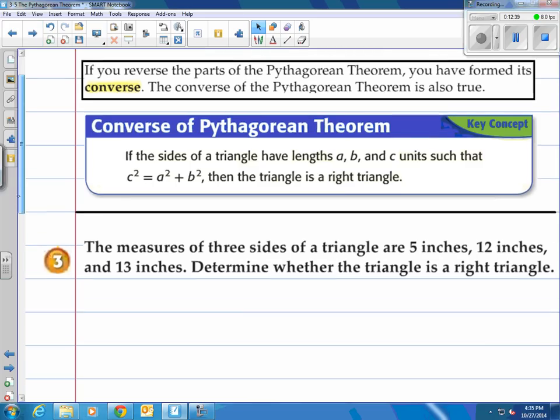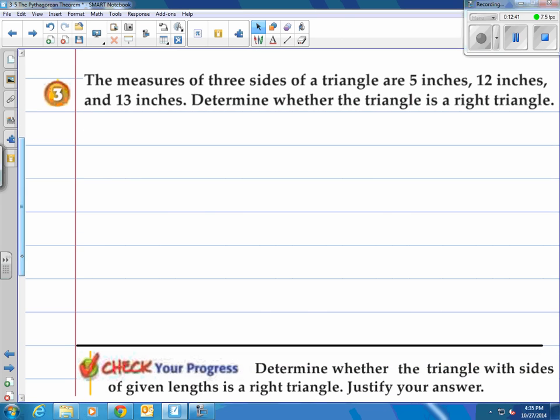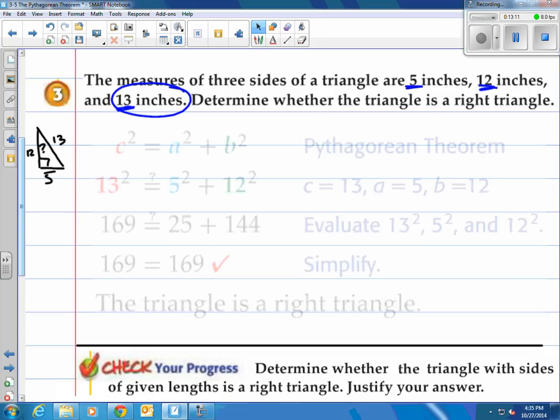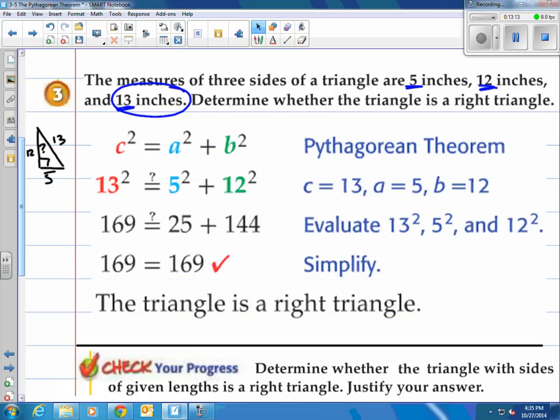So take a look at number three here. It says the measures of three sides of a triangle are 5 inches, 5 inches, 12 inches, and 13 inches. 13 inches would be our hypotenuse because that's the longest side. Determine whether the triangle is a right triangle. Well, you can kind of draw a picture of this. Here's 5, there's, let's say, 12, and then let's say this is 13. So we got 5, 12, 13. Is this going to be a right triangle? Well, it has to fit the Pythagorean theorem. So take a look at what they've done. They've written the Pythagorean theorem, put the numbers in, 13 has to be for your C, has to be alone by itself over there, put in 5 and 12.